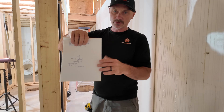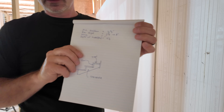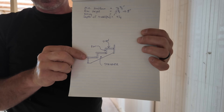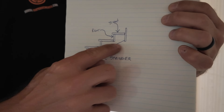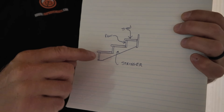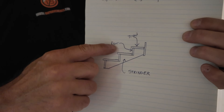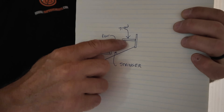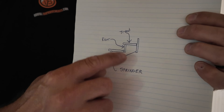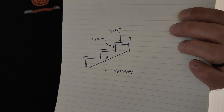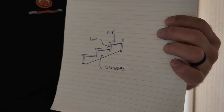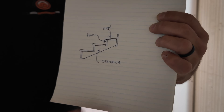Here's a simple drawing. You can see the stringer, which is the wood that's cut out to support the steps. We've got the riser, which is the vertical piece of wood underneath each step, and we've got the tread, which is the part that you walk on. Those are the three main pieces of stair terminology you need to know.